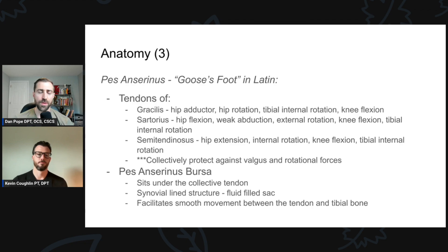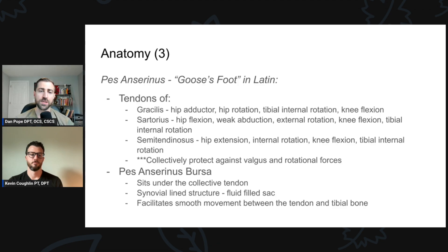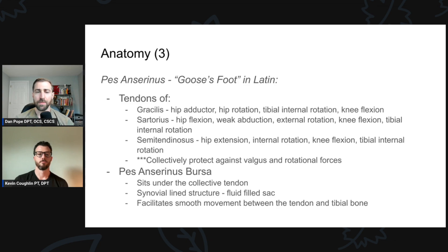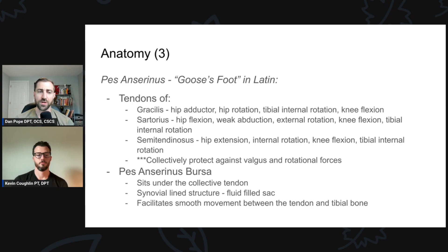One interesting thing about this group of muscles — similar to the IT band — is that collectively they protect against valgus and rotary forces. Just as the IT band helps with varus forces relevant to LCL sprains, the pes anserine on the inside of the knee protects against valgus forces. Tibial femoral joint pathology, mainly osteoarthritis or ligamentous instability, can lead to pes anserine problems because these muscles protect against valgus and rotary forces — they create stability at the knee joint, which may be a primary driver of pes anserine pain.